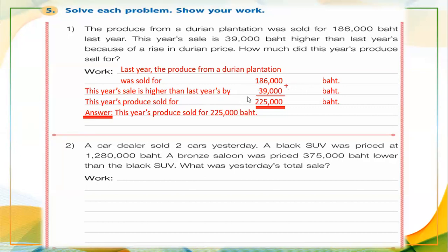By adding one hundred eighty-six thousand plus thirty-nine thousand — the higher amount — the total produce for sale this year is two hundred twenty-five thousand baht.